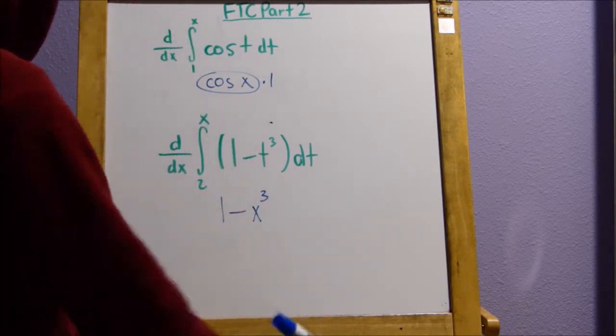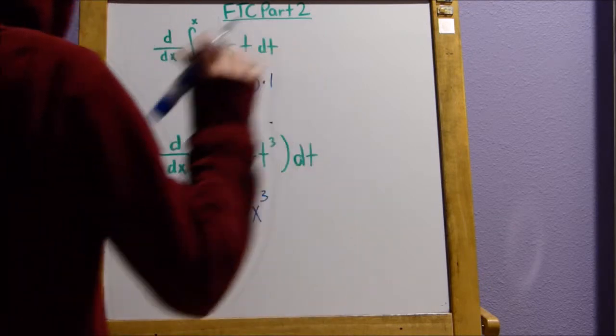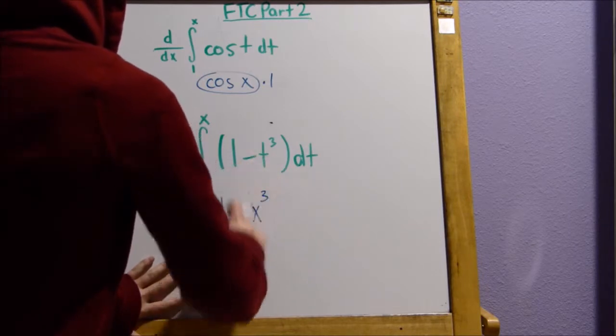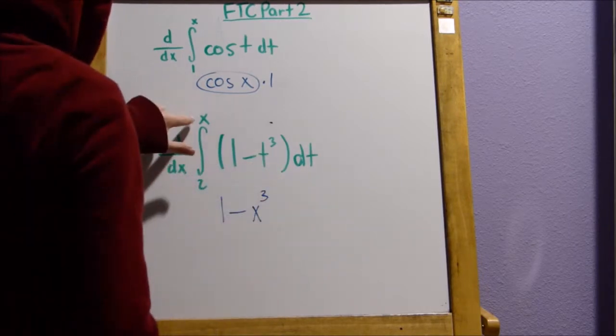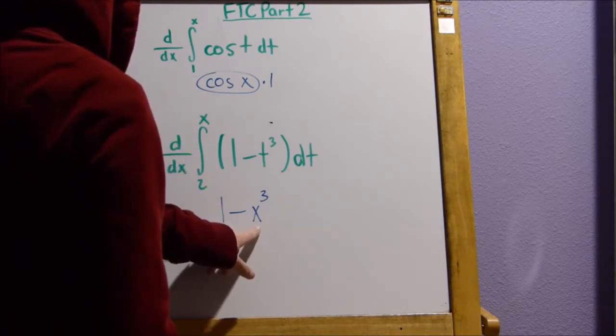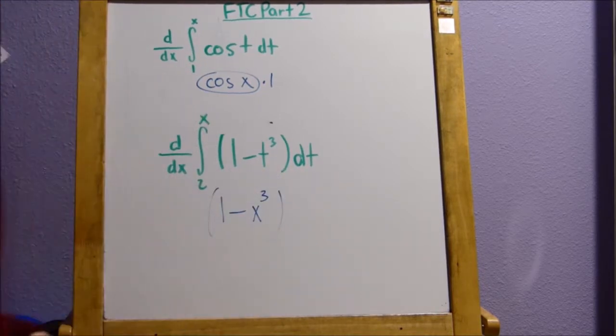So, here you might be tempted to multiply it by 3x squared, but this is a reminder that you're not multiplying it by the derivative of this x here, but always this one here above the interval. Never take the derivative of this x. So, that would just be the answer here.